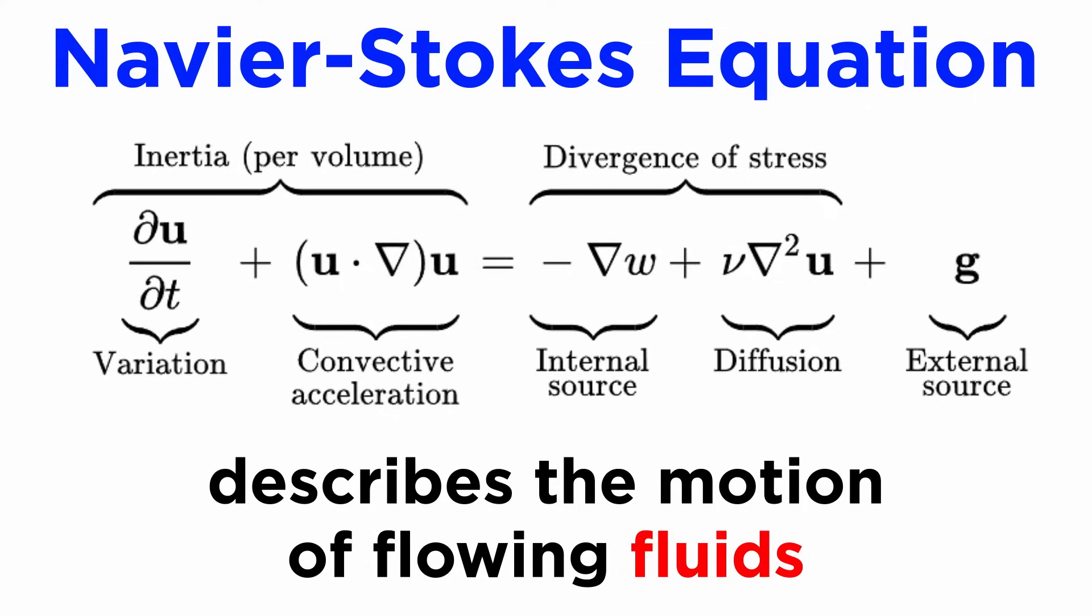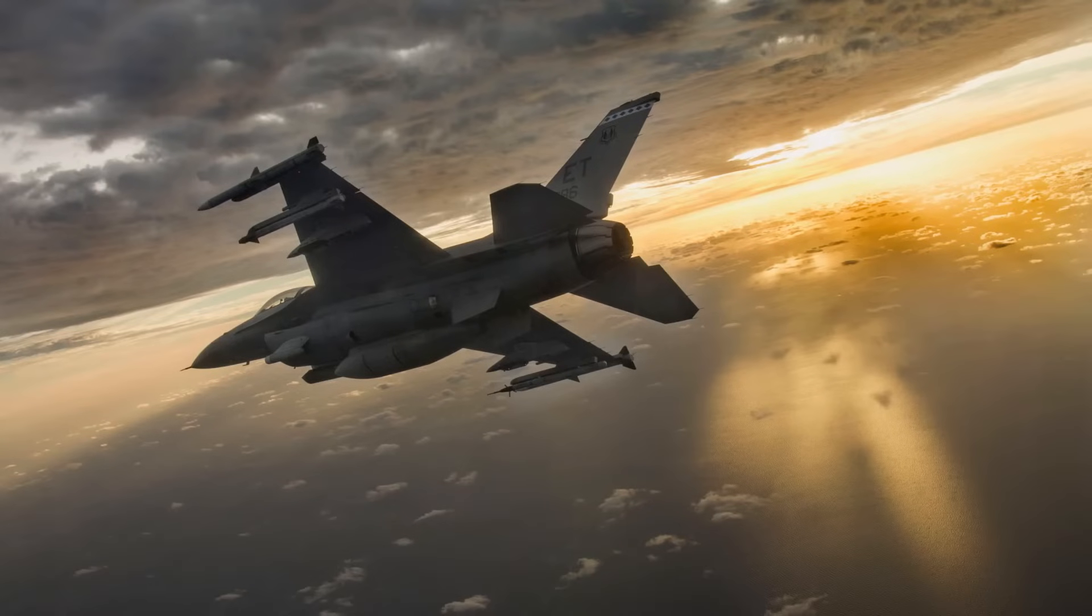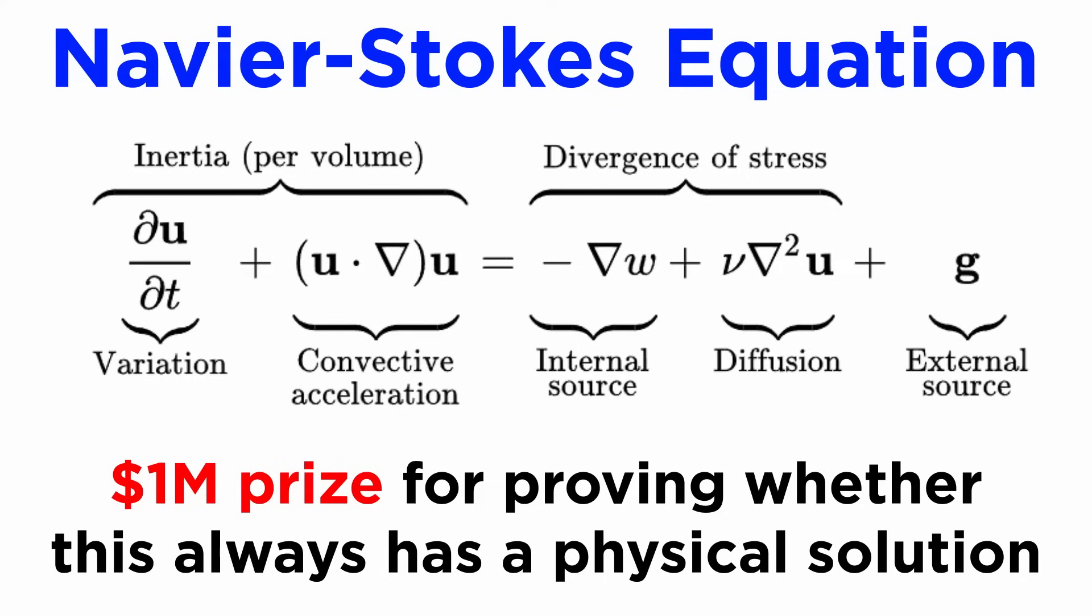The Navier-Stokes equation describes the motion of flowing fluids, like the meandering of water in a river, or the streamlined air flows that lift a fighter jet in flight. There is a million-dollar prize up for grabs for anyone who can prove whether or not this equation always has a physical solution.